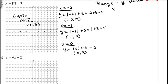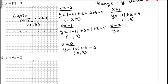For x equals 1: absolute value of 1 is 1, plus 3 is 4. Point: (1, 4). For x equals 2: absolute value of 2 is 2, plus 3 is 5. Point: (2, 5). Drawing these points, you can see they form a big capital V shape. The graph goes straight up in both directions with arrows on each side.